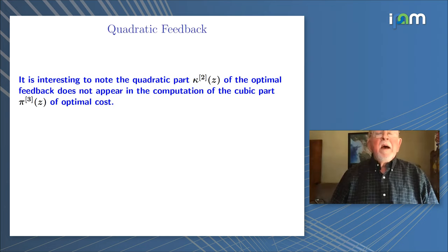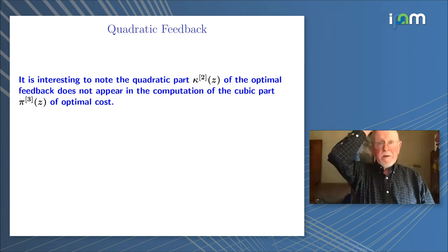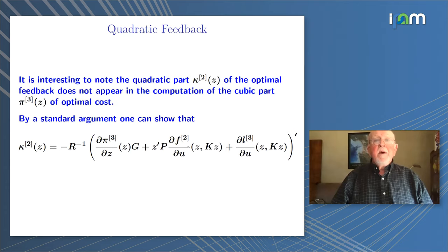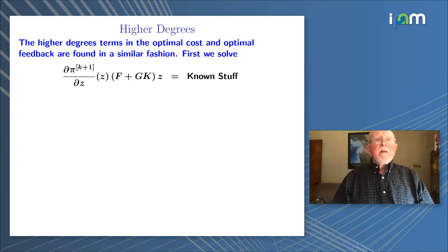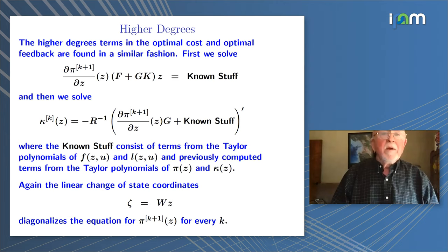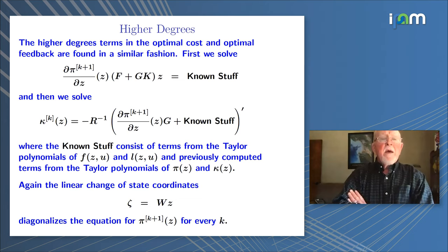The quadratic part of the optimal cost does not show up in these equations — we have to go to the HJB equations to fix the quadratic part of the optimal cost. After we've solved for pi-3, we can solve for kappa-2; that's the triangular nature of these equations. Everything else is stuff we already solved for or data from the problem. At the K plus first degree, we have the directional derivative of pi K plus 1 in the direction of the closed-loop linear dynamics as known stuff. The linear change of coordinates diagonalizes at all degrees.